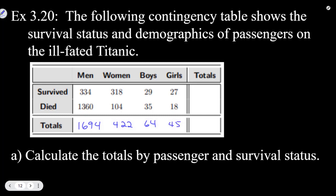Then we can also add across, so if we add up all the people who survived, 334 plus 318 plus 29 plus 27 is going to be 708. If we add up all the people who died, 1360 plus 104 plus 35 plus 18, we're going to get 1517.